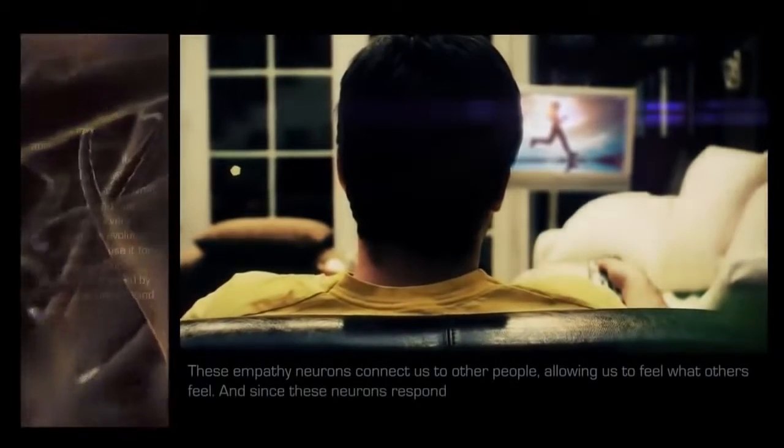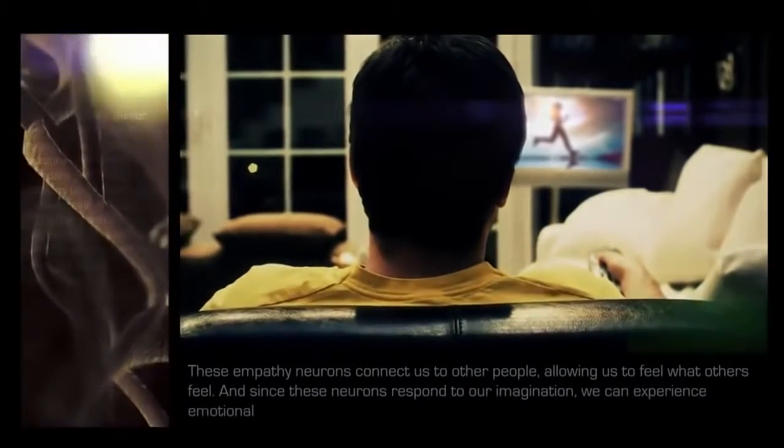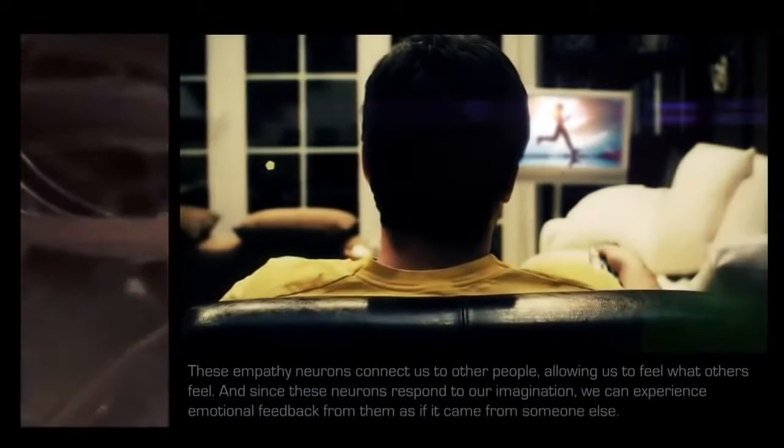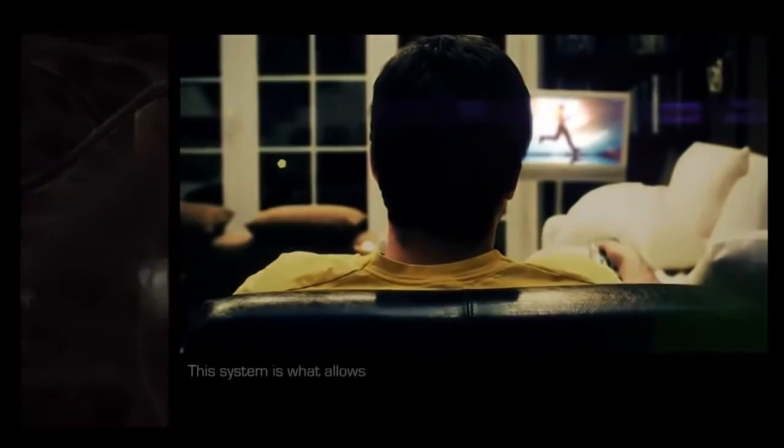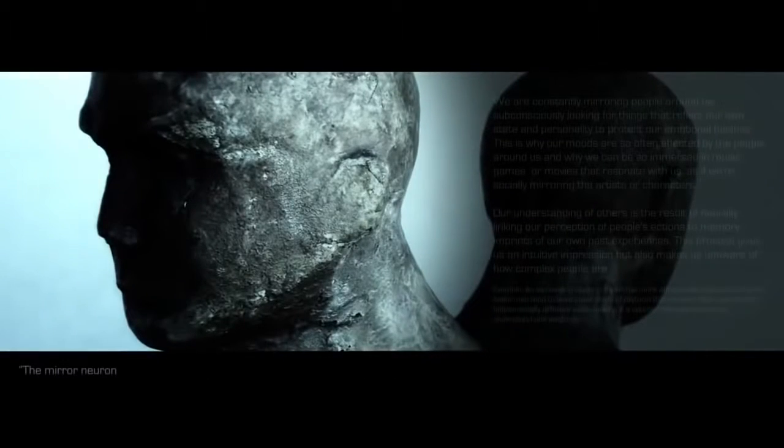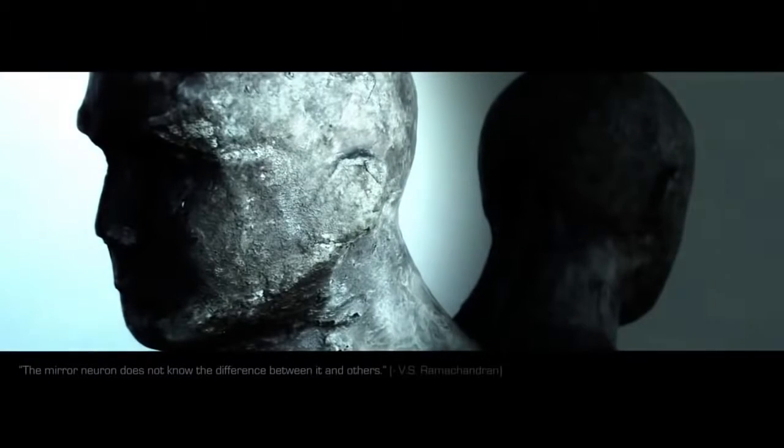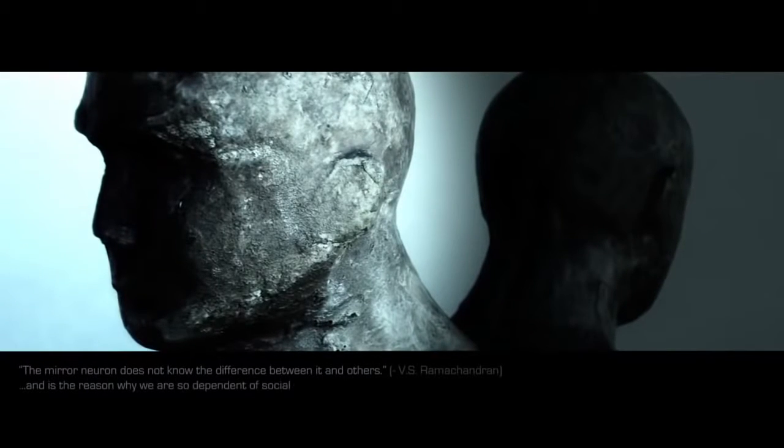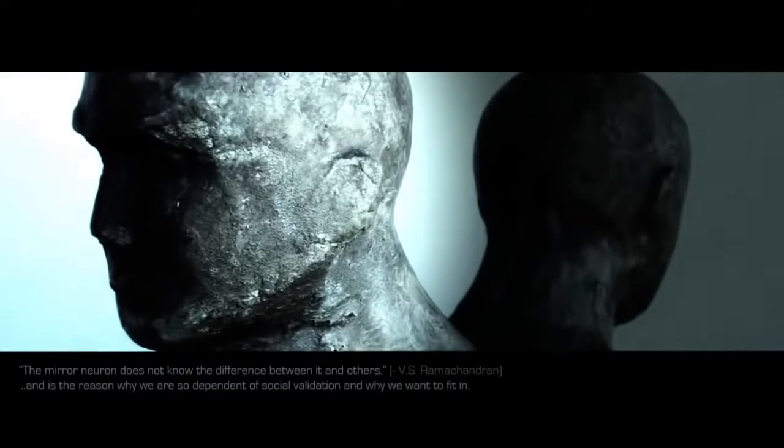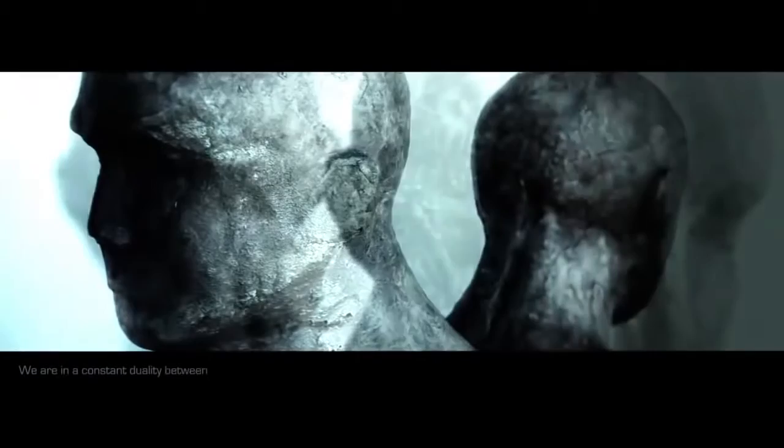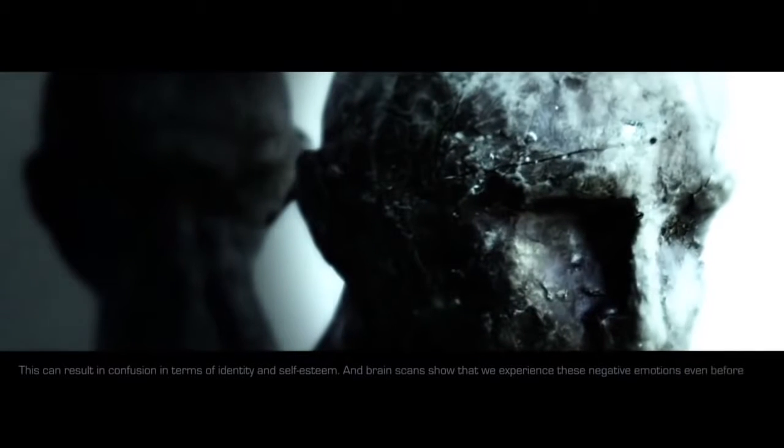And since these neurons respond to our imagination, we can experience emotional feedback from them as if it came from someone else. This system is what allows us to self-reflect. The mirror neuron does not know the difference between it and others, and is the reason why we are so dependent on social validation and why we want to fit in. We are in a constant duality between how we see ourselves and how others see us. This can result in confusion in terms of identity and self-esteem, and brain scans show that we experience these negative emotions even before we are aware of them.